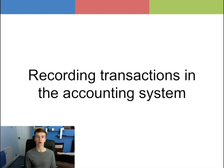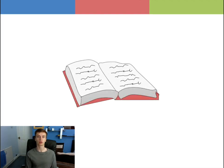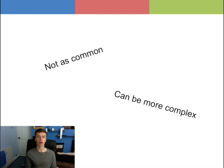Referring to the video on recording transactions in the accounting system, the transactions that are not entered in the other five books of original entry are entered in the journal. The journal is a type of diary used to record special transactions at the end of an accounting period. The transactions are not as common and can be more complex than the transactions entered in the other books of original entry.